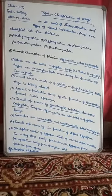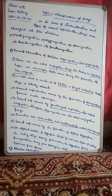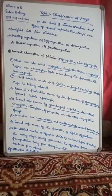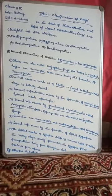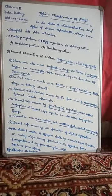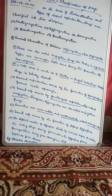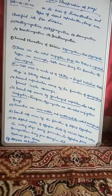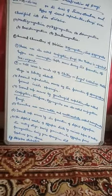Regarding the sexual mode of reproduction, it occurs by gametangial copulation. Gametangial copulation means the two gametes — male and female — copulate with one another and bring about sexual reproduction. This is also called conjugation, which is why Zygomycetes are called conjugation fungi.